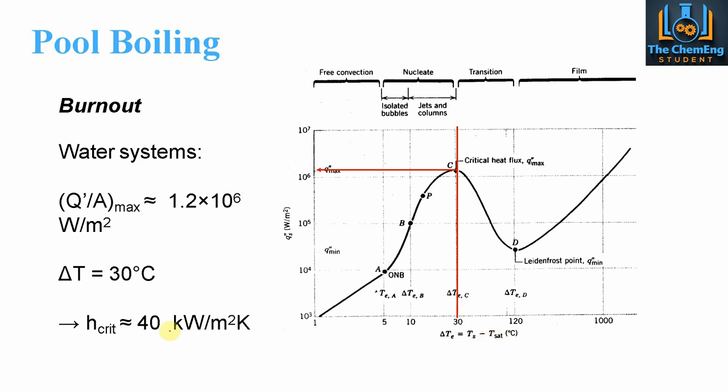Now the enthalpy, so the critical enthalpy that corresponds to this heat flux, is around 40 kilowatts per meter squared Kelvin. Now these values are important when we look at the different correlations.